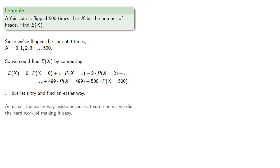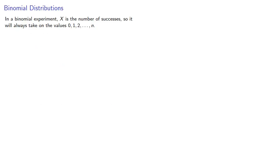And as usual, the easier way exists because at some point, we did the hard work of making it easy. Now in a binomial experiment, X is the number of successes, so it will always take on the values 0, 1, 2, all the way up to n, the number of trials.